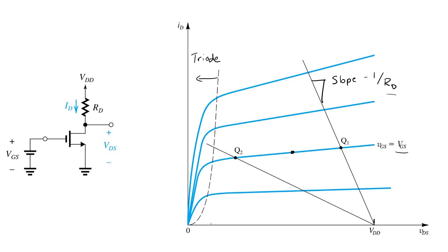So that would suggest perhaps an operating point somewhere around here, which would suggest a particular value of RD, if the value of VGS is as indicated here. But there's trade-offs at play.